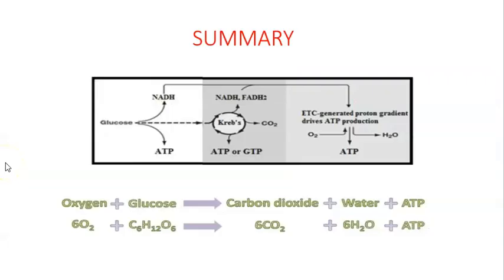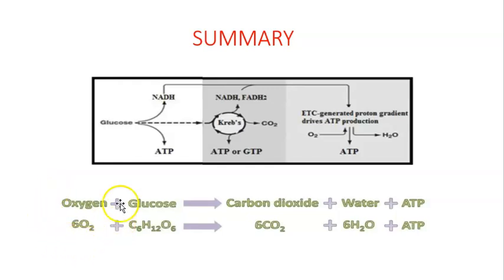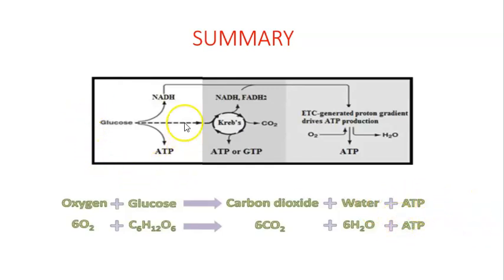To summarize, cellular respiration has three main steps: glycolysis, the Krebs cycle, and oxidative phosphorylation. These three steps transform oxygen and glucose into carbon dioxide, water, and ATP. Glycolysis is anaerobic, while the Krebs cycle and oxidative phosphorylation are aerobic.